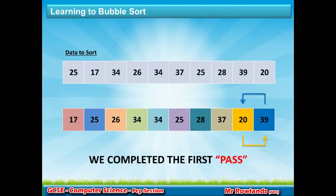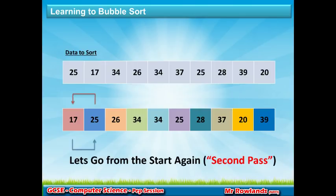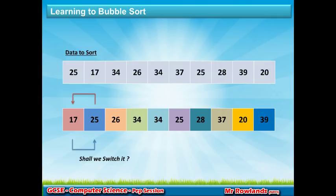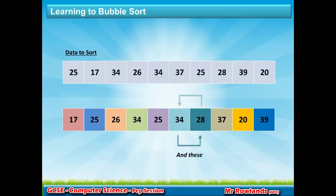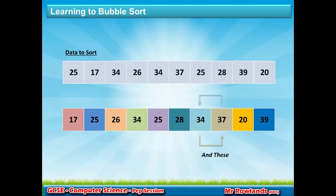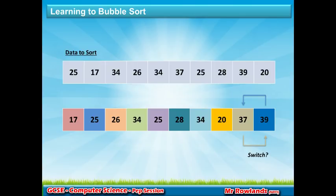After the first pass, the list is still not sorted, so we proceed to the second pass. We check each adjacent pair again: 17 and 25 — correct order, no swap. 25 and 26 — correct order, no swap. 26 and 34 — no swap. 34 and 34 — same, no swap. 25 and 34 — they switch. 28 and 34 — they switch. 34 and 37 — no swap. 20 and 37 — switch. 37 and 39 — no swap. That completes the second pass.